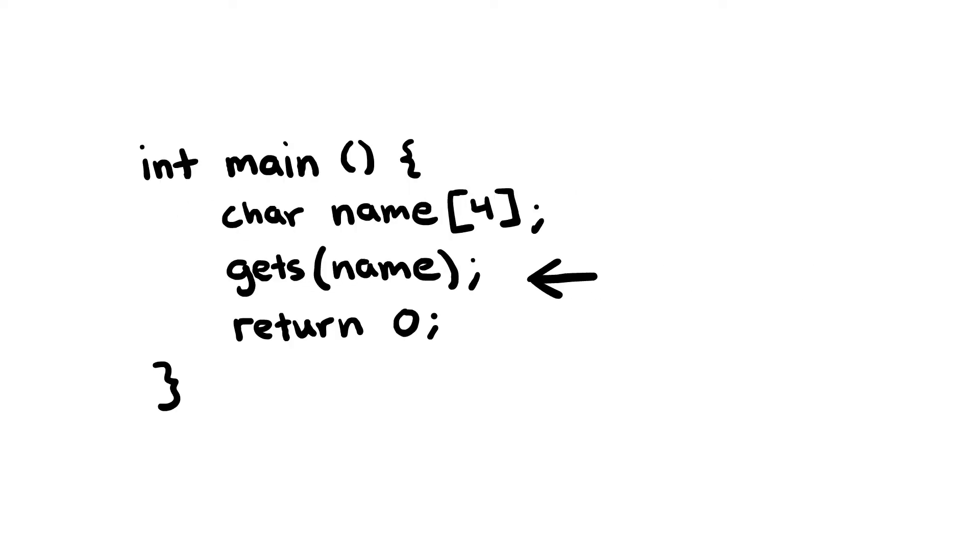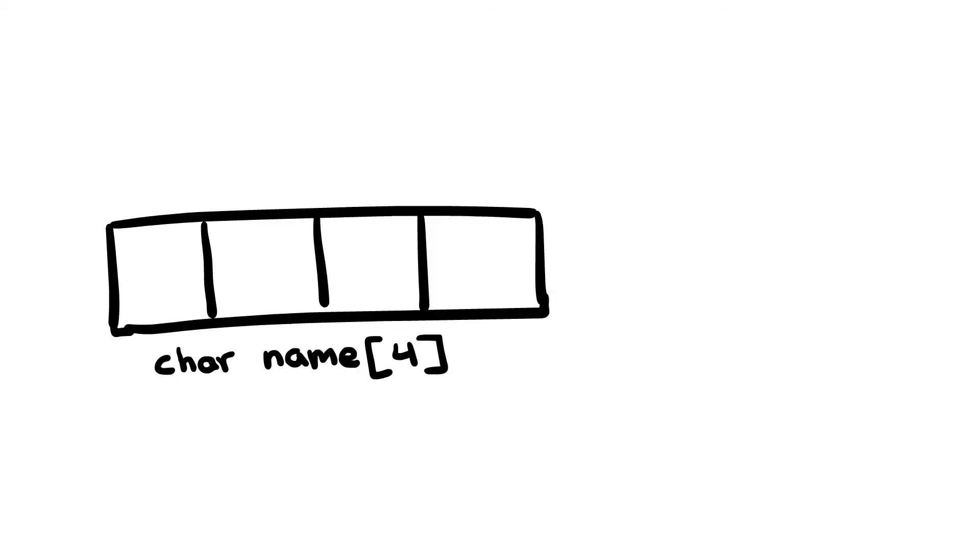This type of user-controlled buffer overflow can happen when a program tries to take user input, like a user's name, but forgets to check to make sure that the buffer is large enough to hold the given name.